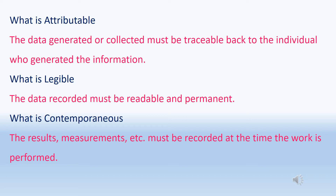What is legible? The data recorded must be readable and permanent. The data recorded should be clear and legible for reading, and it should be recorded in a permanent format. For example, if you are recording data on paper, it should be recorded with a permanent ink pen and not with a pencil, which can be erased or altered later.